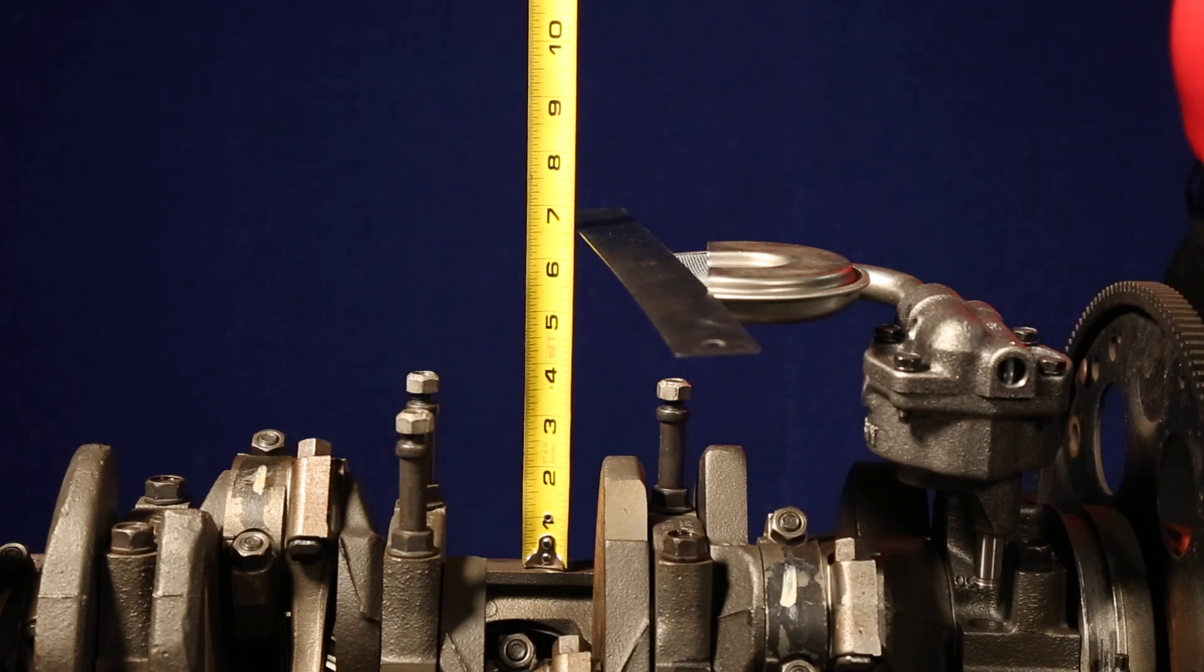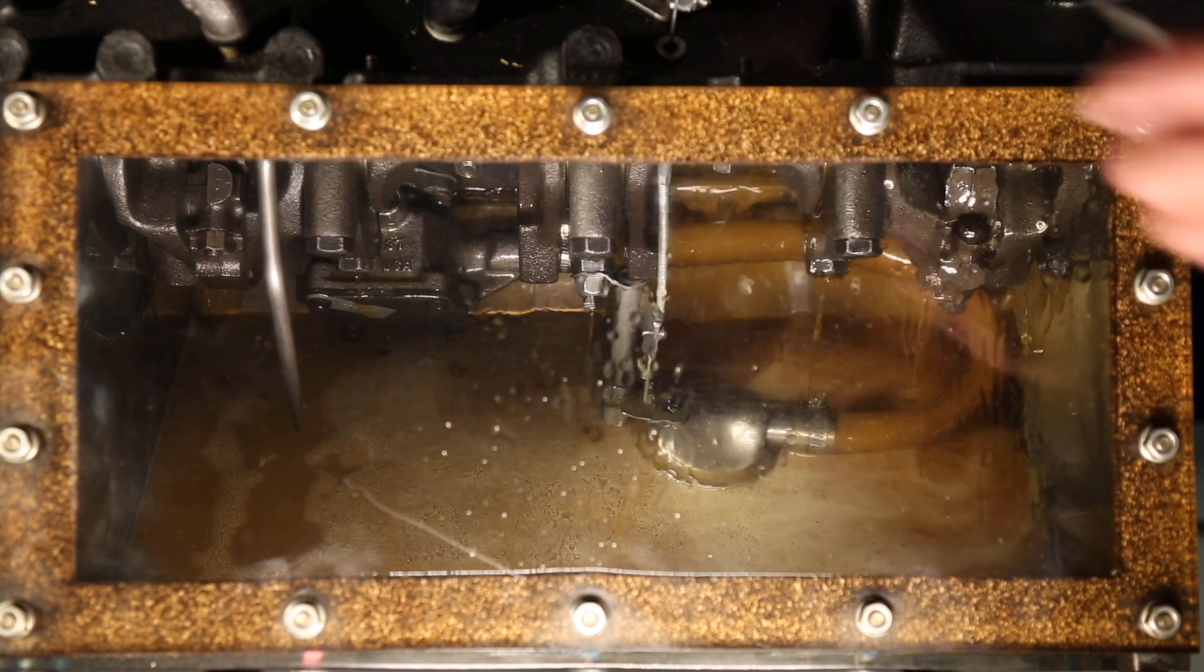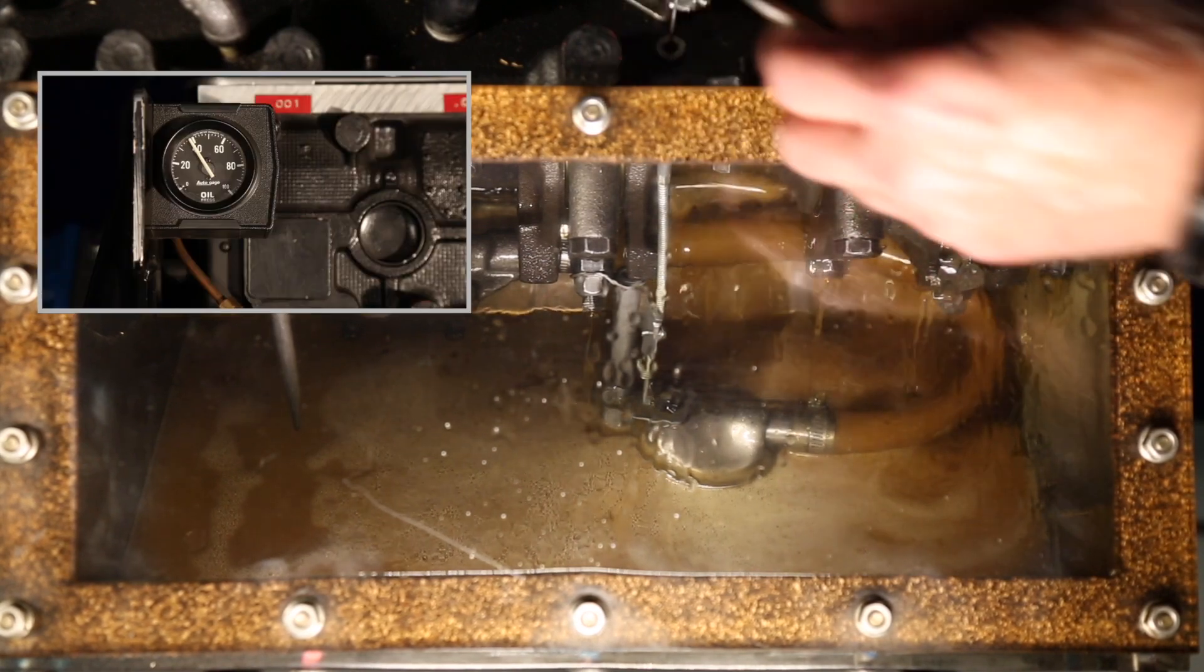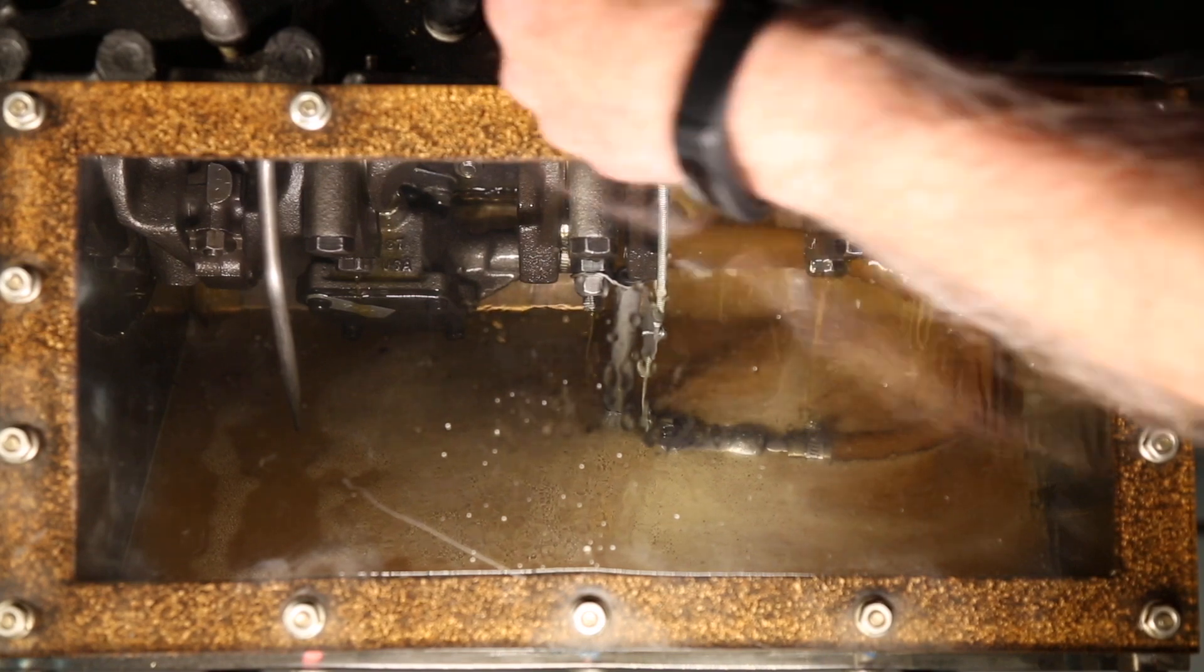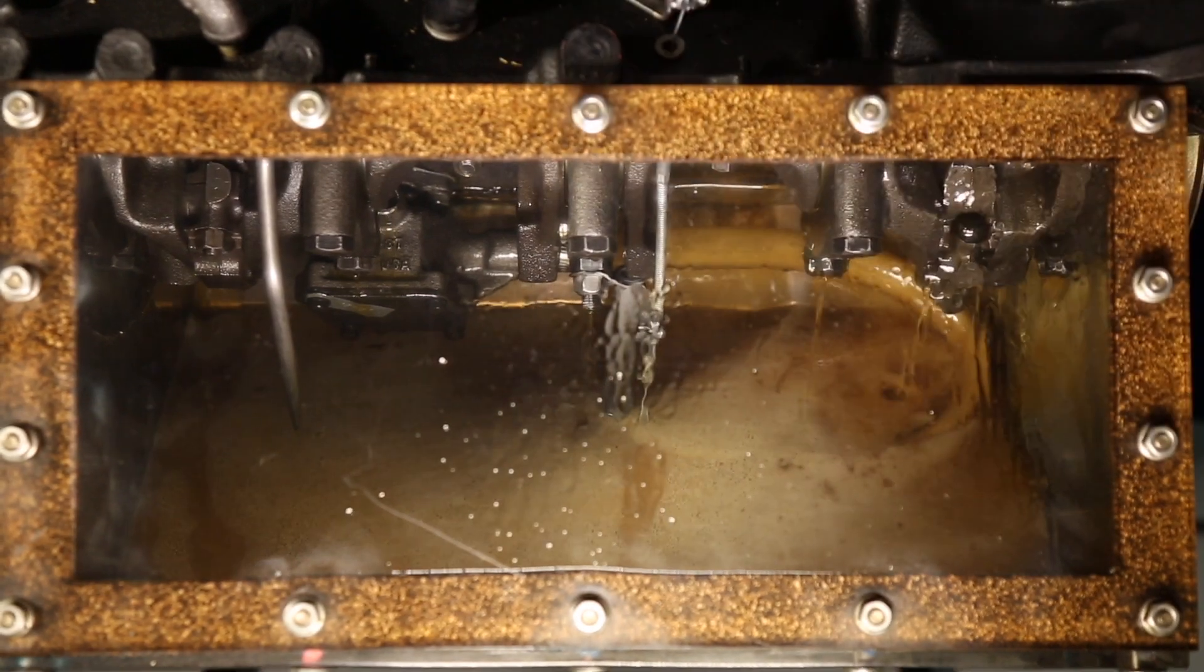As you can see, if the screen is too close to the bottom of the pan, it will result in oil starvation. And likewise, if the screen is too far away, the engine will starve for oil.